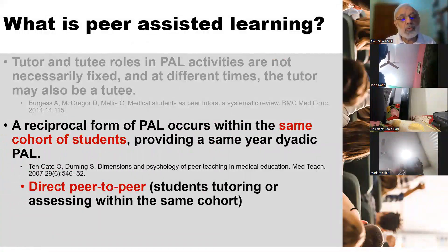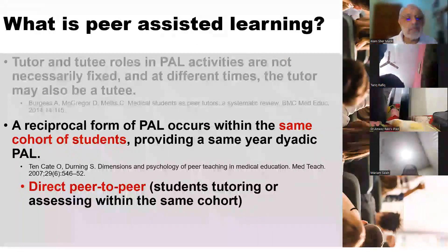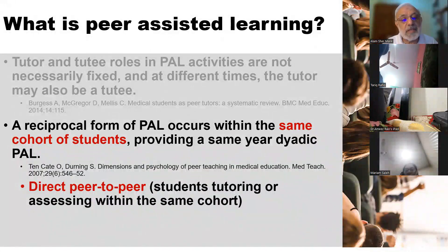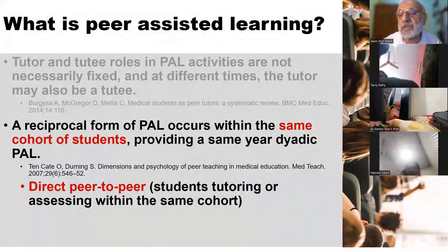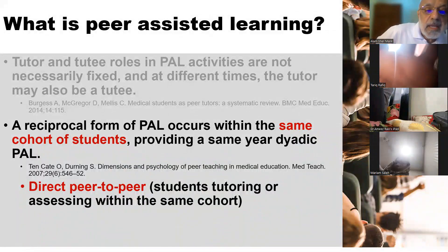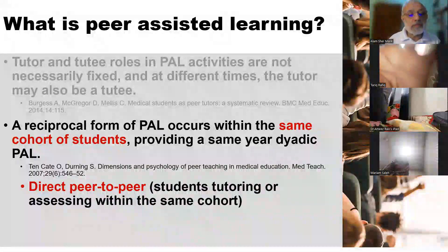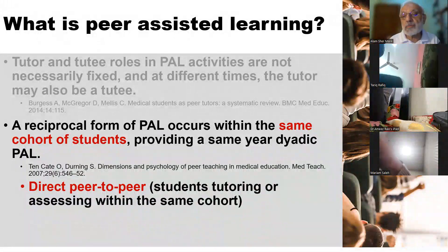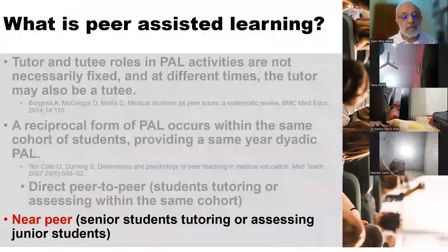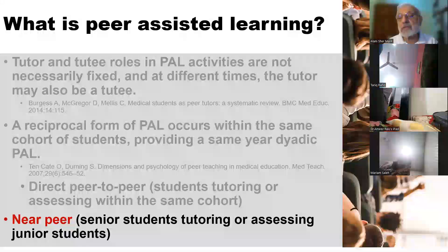There are two subclasses or groups. One is reciprocal, meaning students from the same cohort — for example, both year four students — which is called direct peer-to-peer. The other is near-peer, where senior students are tutoring junior students.